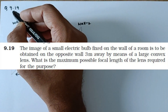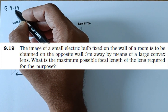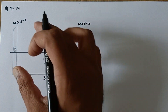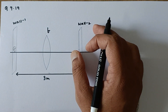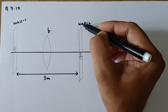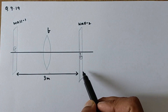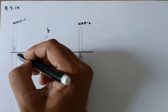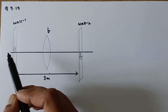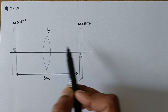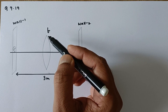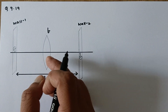Let's discuss question 9.19, standard 12 physics ray optics NCERT textbook. There are two ways of doing this problem. The question states that there is one wall separated from another wall by a gap of 3 meters. There is a bulb on the first wall and we are supposed to obtain its image on the other wall. What should be the maximum focal length of this convex lens?